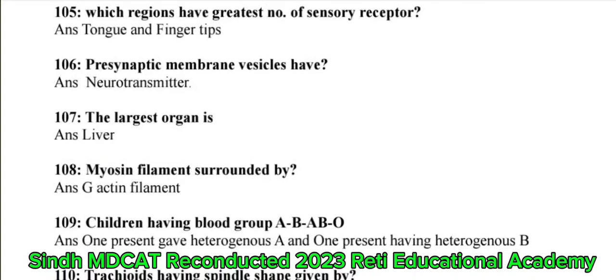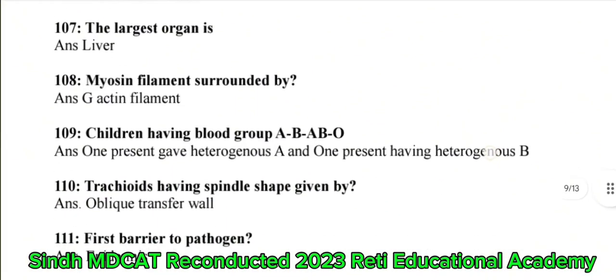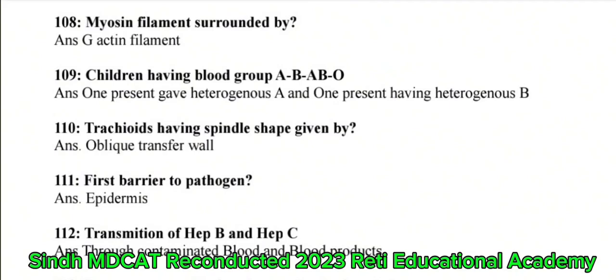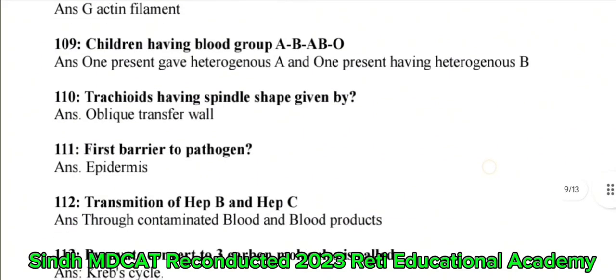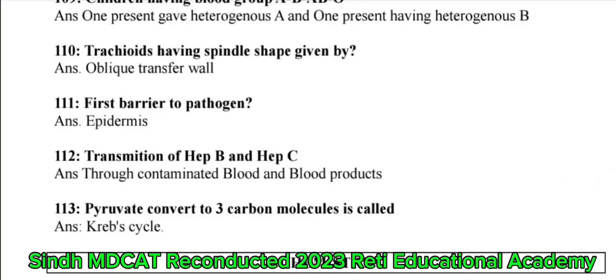Question 109: Children having blood types A, B, AB, and O — the correct answer is one parent has heterozygous A and one parent has heterozygous B. Question 110: Tracheids having spindle shape given by oblique transverse walls. Question 111: First barrier to pathogens — the correct answer is epithelium. Question 112: Transmission of Hepatitis B and Hepatitis C — the correct answer is through contaminated blood and blood products. Question 113: Pyruvate converted to three-carbon molecules is called the Krebs cycle.